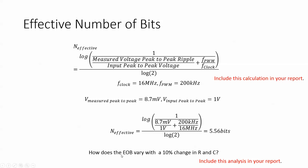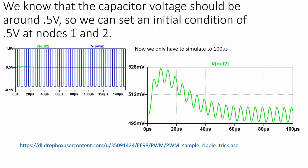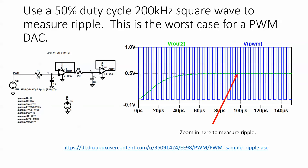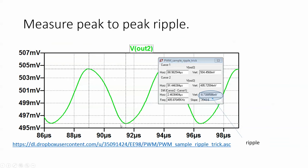And then something else. How does your effective number of bits vary with a 10 percent change in R and C? This is quite difficult to do by hand if at all possible. So really all you have to do is change R and C up by 10, see what happens, change them down by 10, and see what happens. You don't have to include a plot for that. You can just report your measured results.